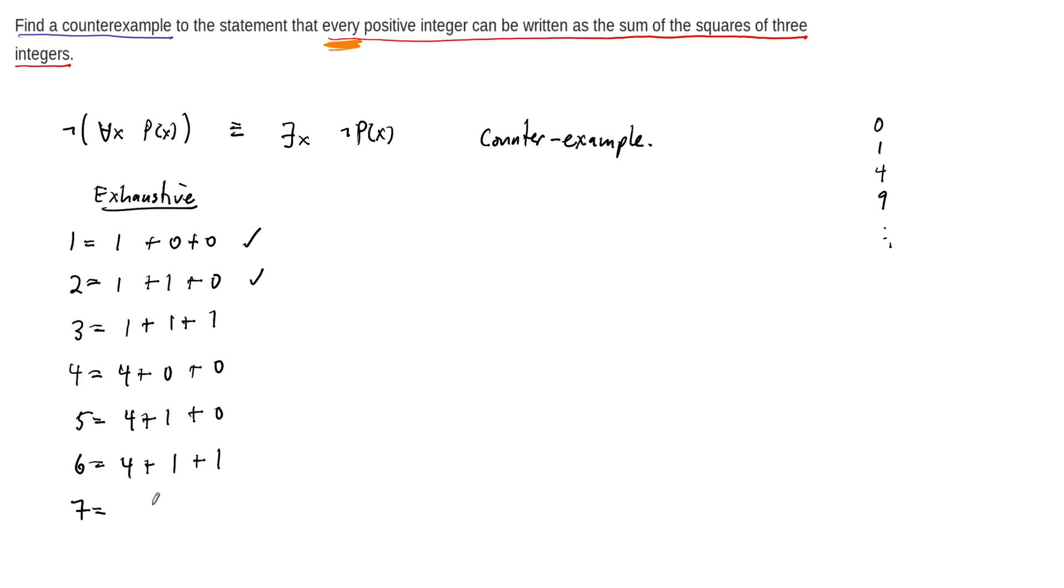Well, seven is four plus one plus two, four plus three plus zero. Can't be done, right? All right, so this one cannot be written as a sum of just three squares because you would need a four plus one plus another one, and there's no way to get that from our list over here, and the next highest number here is nine, right?